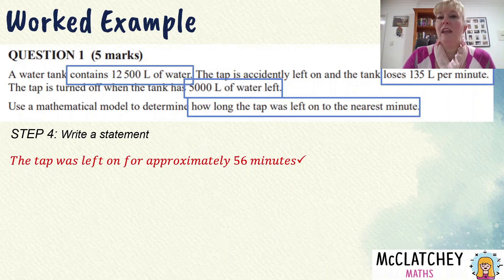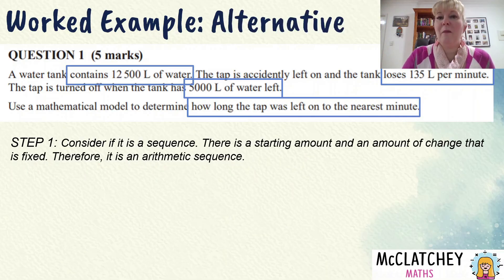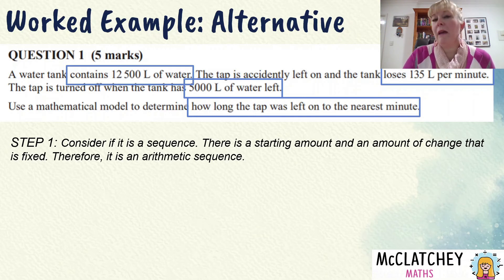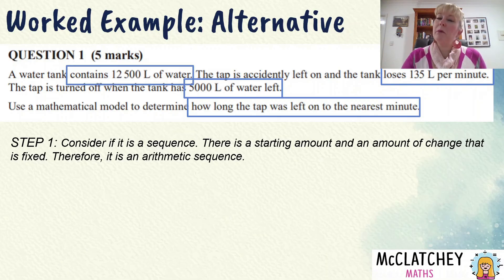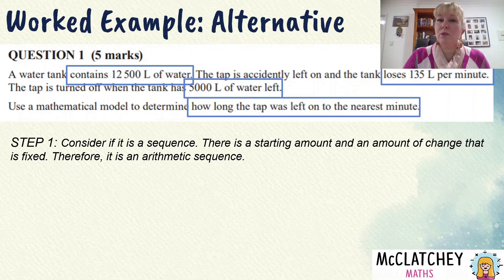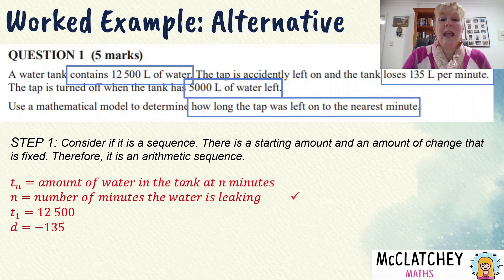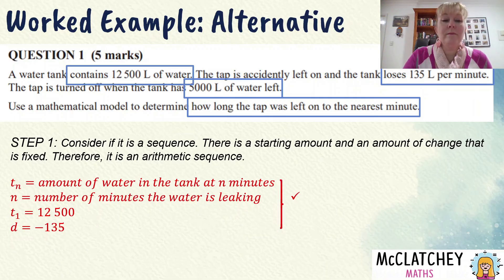Now let's look at how we would do this problem with the mindset of a year 12 student thinking about sequences. Firstly, we consider this as a sequence — there's a starting amount, which would be term one, and we've got a fixed amount of change, not a percentage. Therefore it's going to be an arithmetic sequence. We're applying our understanding of sequences to this situation — it's kind of like depreciation, except we've got water being lost out of a tank. Now that we know it's an arithmetic sequence, we can move to our formula sheet and state some variables: Tn is the amount of water in the tank at n minutes; n is the number of minutes the water is leaking; T₁ = 12,500; and d = −135.